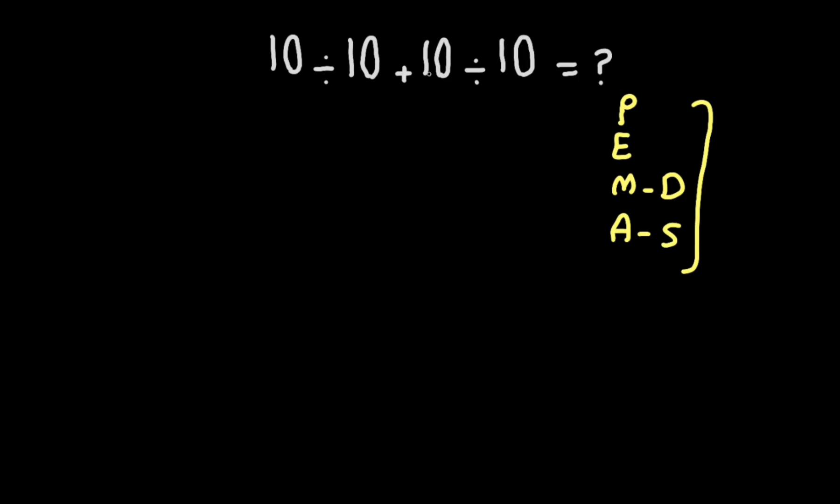Now as we know, when we have more than one division in one expression, we have to solve from left to right. Now 10 divided by 10 gives us one.